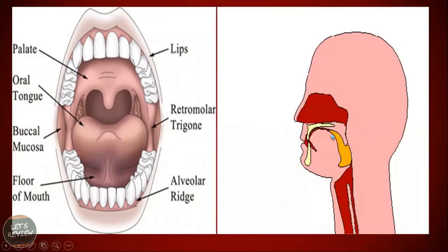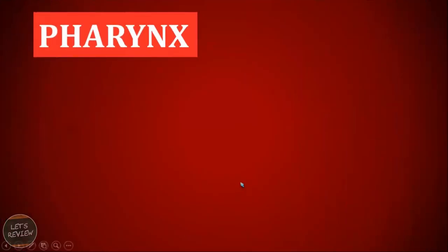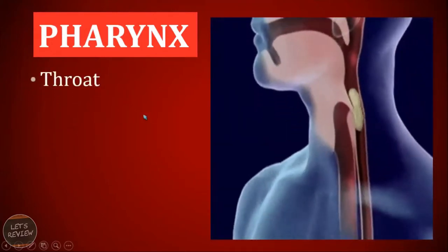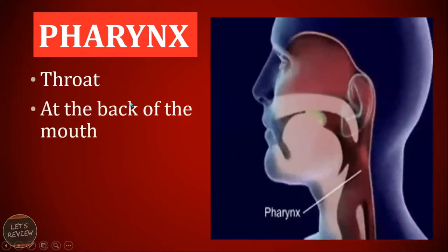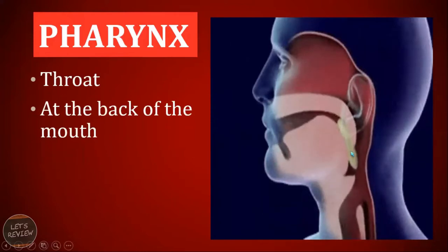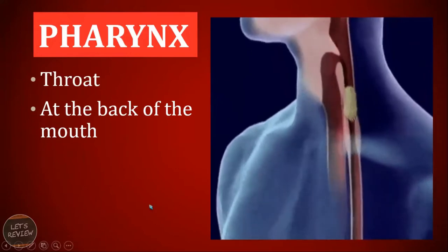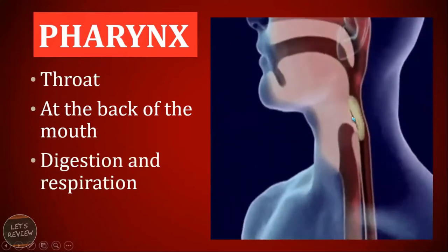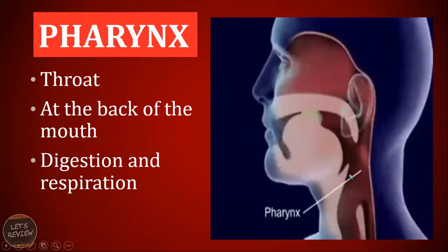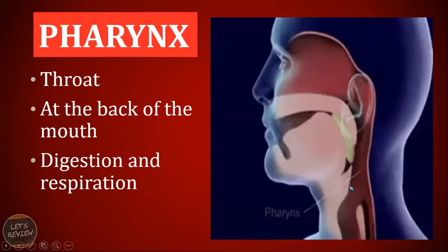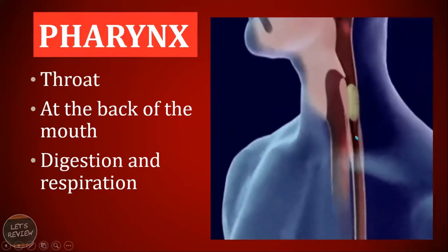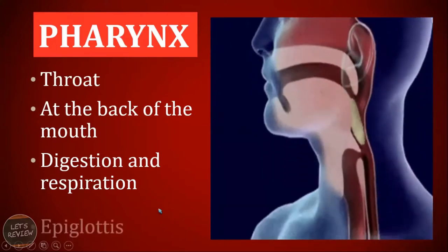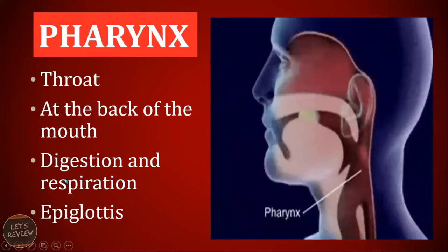The next part connected to the mouth is called the pharynx, also known as the throat, and it can be found at the back of your mouth. Digestion and respiration may happen at the same time here in the pharynx. This is the trachea and esophagus. The small flap of tissue that covers the trachea when you swallow food is called the epiglottis, which prevents food from entering your trachea.